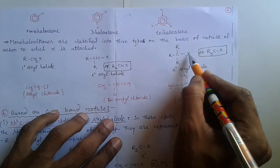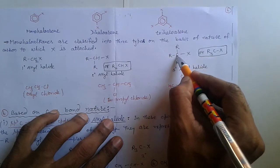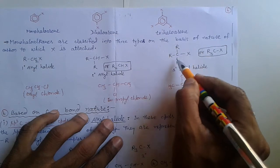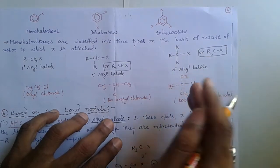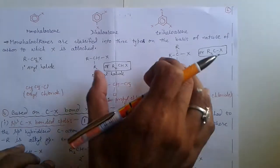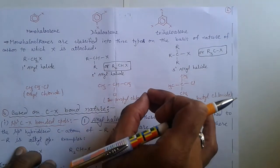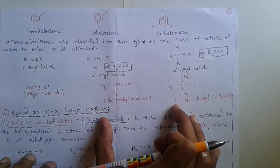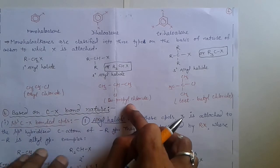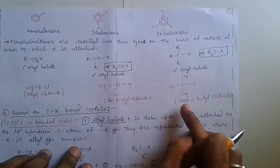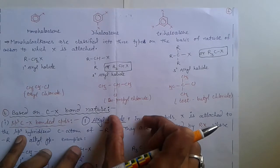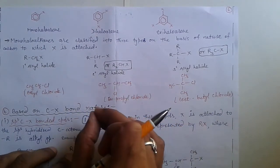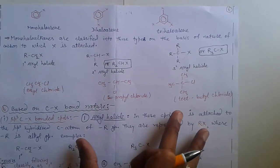In a three degree alkyl halide, halogen is attached to a carbon that is attached to three carbons in the carbon chain. Examples of one degree, two degree, and three degree alkyl halides are ethyl chloride, isopropyl chloride, and tertiary butyl chloride, respectively. So monohalo alkanes are classified into three types: one degree, two degree, and three degree alkyl halide.